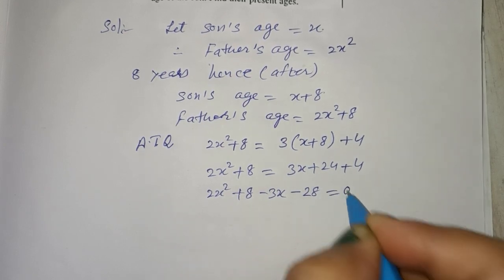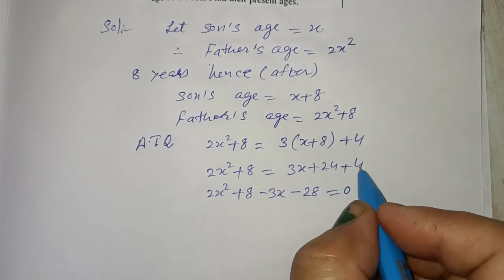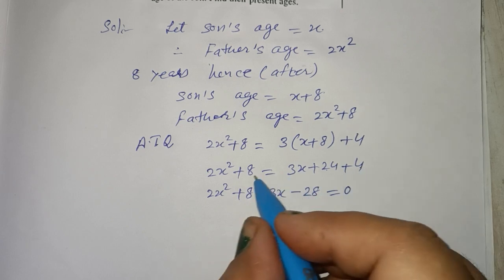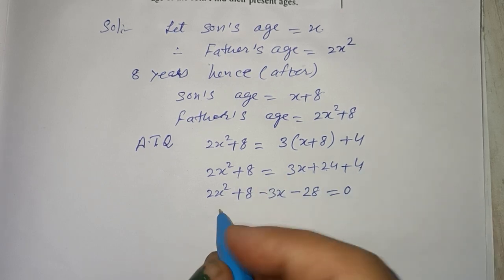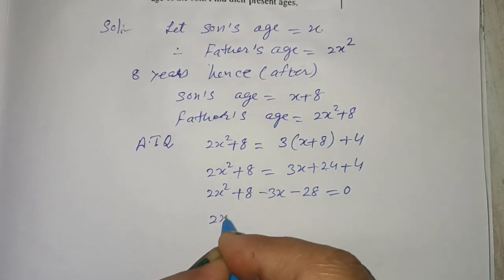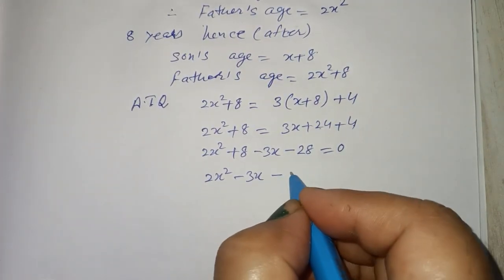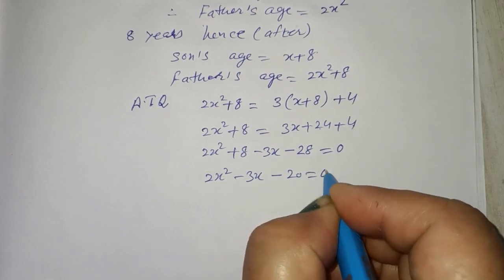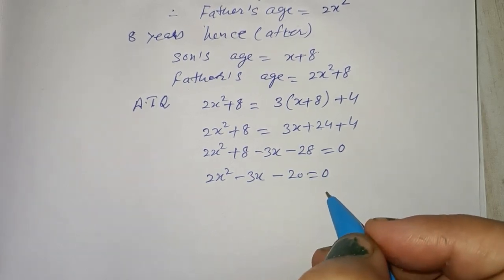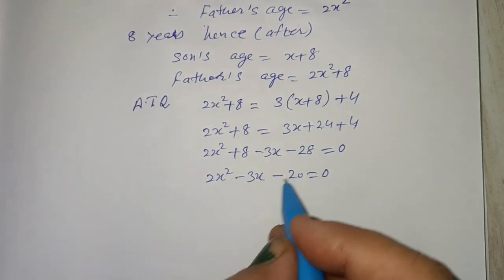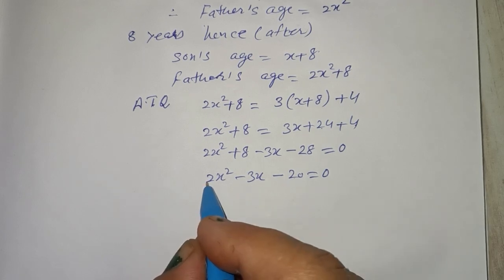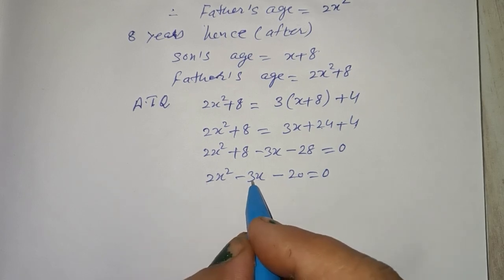is equal to 0. 24 plus 4 is 28, going to the other side negative. 2x square minus 3x minus 20 is equal to 0. Now make factors - multiply to get minus 40, add to get minus 3.